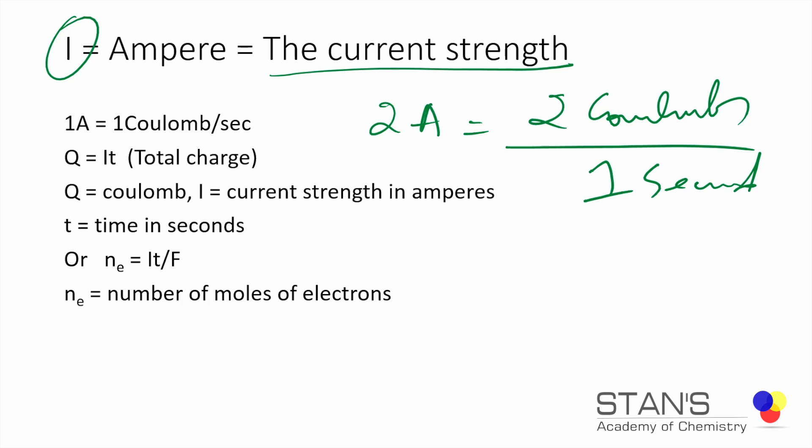Q is the charge that we represent. Q is used to represent coulombs, I is used to represent the current strength in amperes, and t represents time and it's expressed in seconds. That's very important.